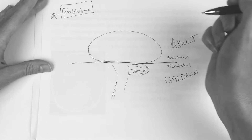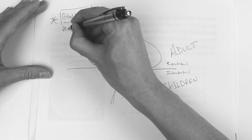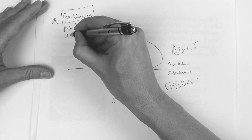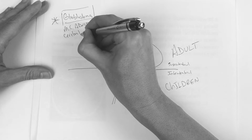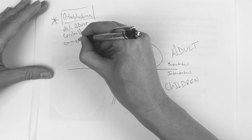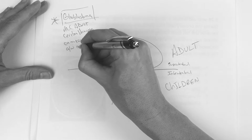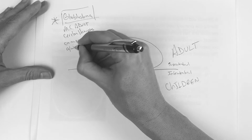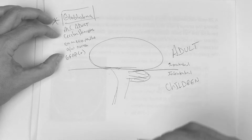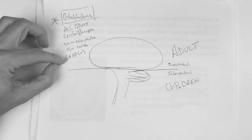Glioblastoma — this is going to be the most common one, the most common adult tumor. It's in the cerebral hemispheres. It can cross midline, it's associated with necrosis, and it's GFAP positive. Glioblastoma: most common, in the cerebral hemispheres, can cross midline, associated with necrosis, GFAP positive.